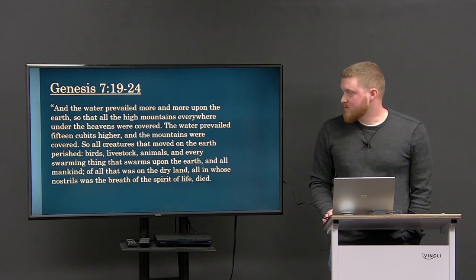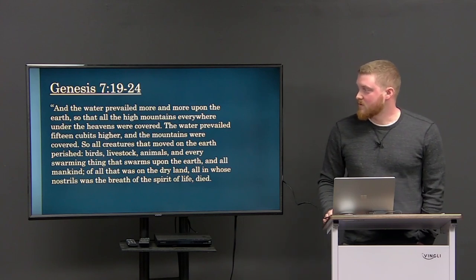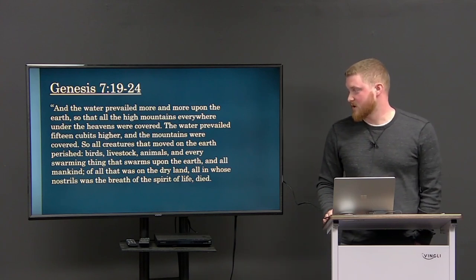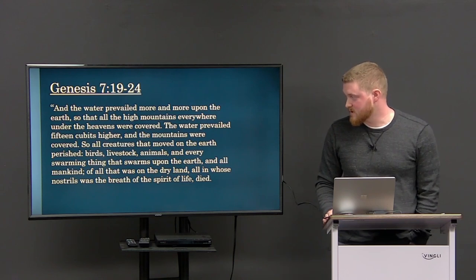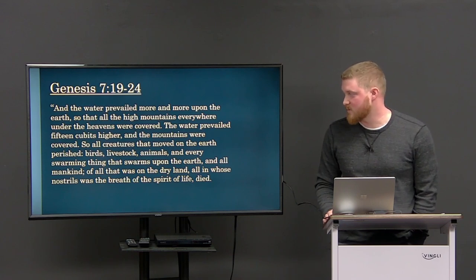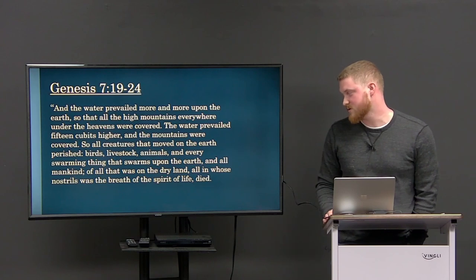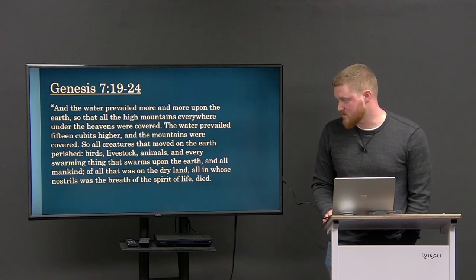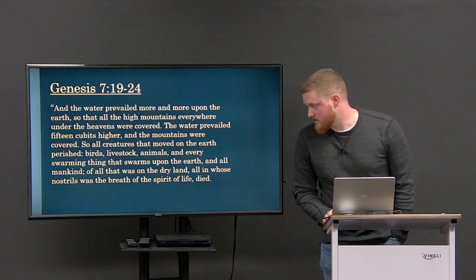The rain fell upon the earth for forty days and forty nights. And the waters prevailed more and more upon the earth, so that all the high mountains everywhere under the heavens were covered. The water prevailed fifteen cubits higher, and the mountains were covered. So all the creatures that moved on the earth perished - birds, livestock, animals, and every swarming thing that swarms upon the earth, and all mankind, and all that was on the dry land, all in whose nostrils were the breath of life, the spirit of life, died.